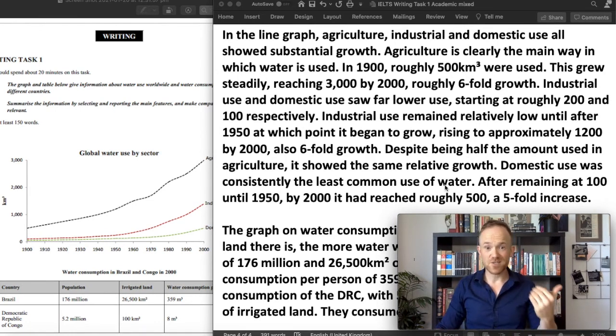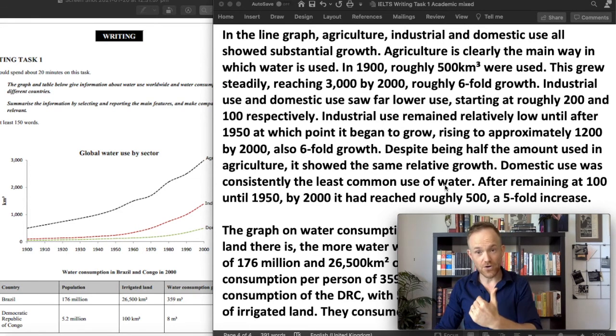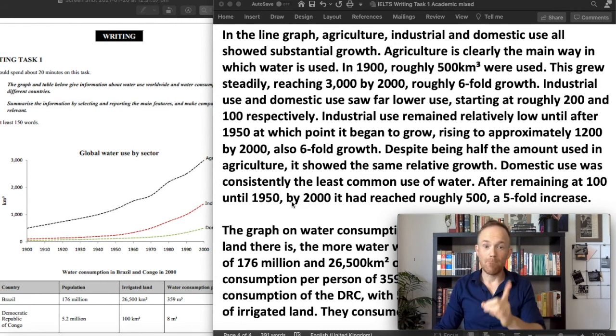Domestic use was consistently the least common use of water. After remaining at 100 until 1950, by 2000, it had reached roughly 500. By 2000, it had reached past perfect. So I've got all kinds of past tense. I've got this comma, ing, participle clause. We've got despite to show the contrast. And then we've got past perfect here.